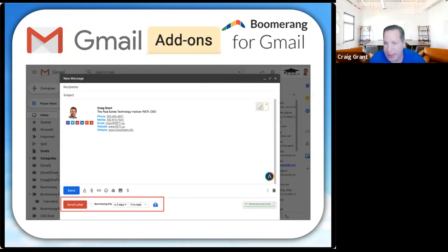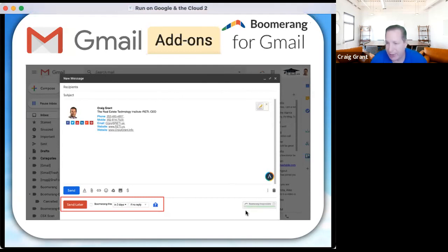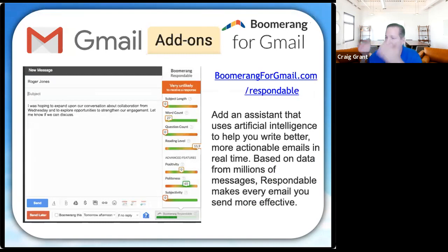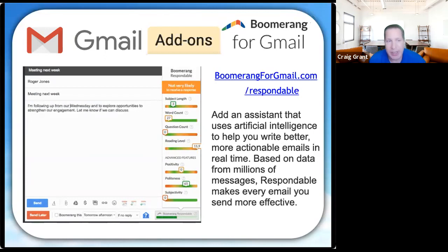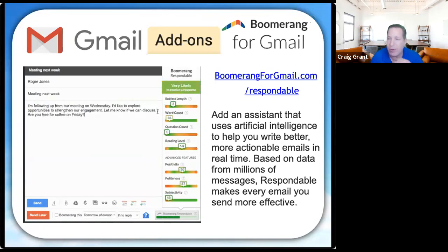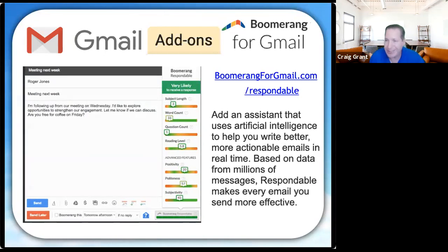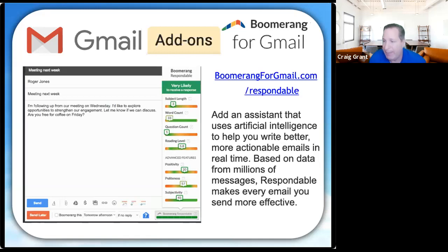Boomerang's 'notify me' checkbox lets you track whether someone reads your email. If Eileen hasn't read your email within three days, it sends you a notification so you know to try a different approach — maybe a better subject line or a phone call. Boomerang also has a 'Respondable' button that uses artificial intelligence to analyze your email's content on the fly for the likelihood someone will respond. If you have a weak subject line, it scores you low; as you improve your email, the score goes up to 'very likely.' It helps you write better emails as you're typing them.